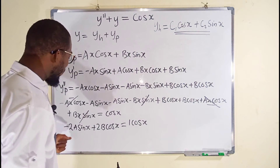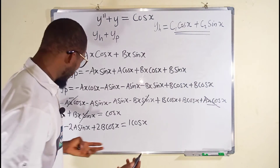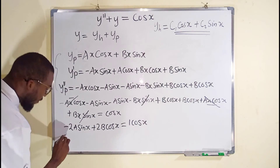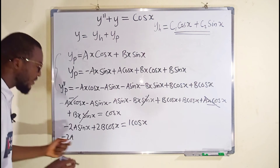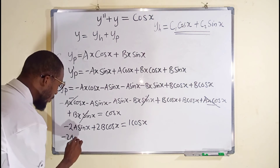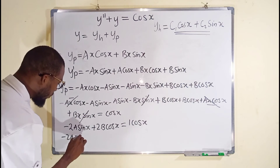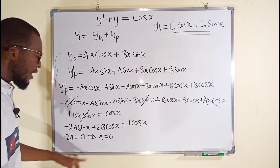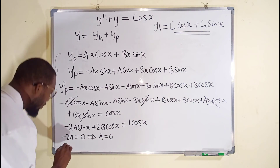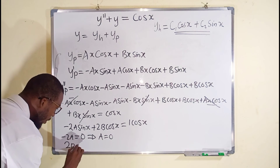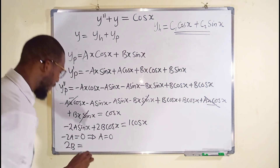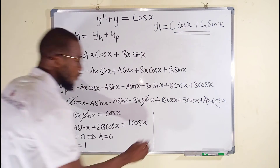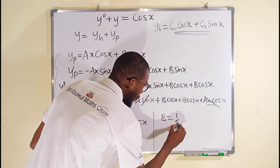To solve for a and b, we equate coefficients. There is no sin x on the right-hand side, so its coefficient is 0. This means minus 2a equals 0, which implies a equals 0. The coefficient of cos x on the left is 2b and on the right is 1, so 2b equals 1, which implies b equals 1 over 2.